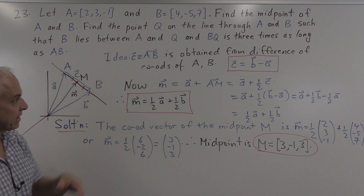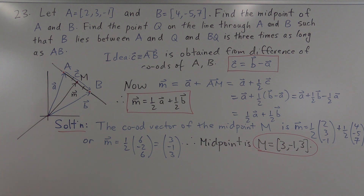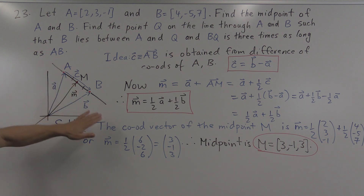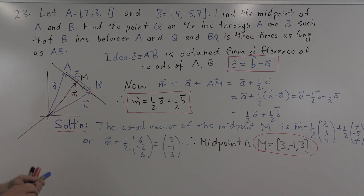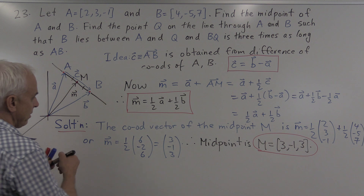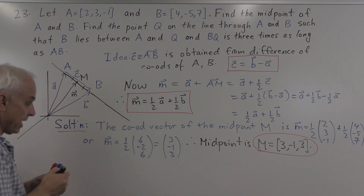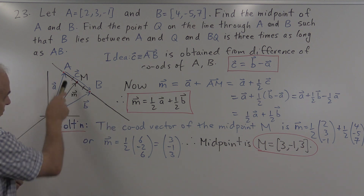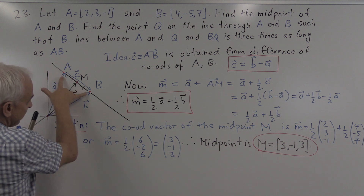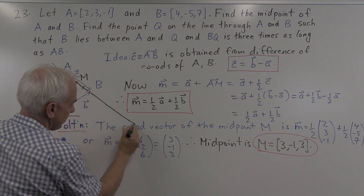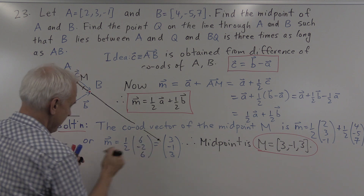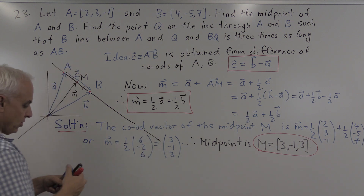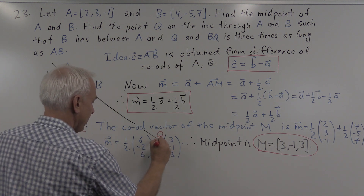Now let's have a look at this second part, which is a little bit trickier. We're looking for, on the same diagram, a point Q also on the line AB, so that B lies between A and Q. So Q is on this side — we extend the line out somewhere. And such that BQ is 3 times as long as AB. So here's AB, and we want to take something that's 3 times that much. We're looking for a point Q — let me put it in red so we don't get confused.